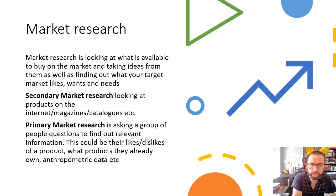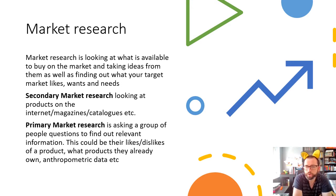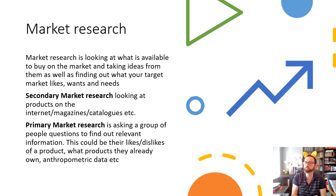Market research is looking at what is available to buy on the market and taking ideas from it — that's often secondary market research, looking at existing products. Primary market research is where we interview or ask a group of relevant people some relevant questions. For example, if you're designing a lamp, you wouldn't ask what type of car they drive — make sure questions are useful to your project.